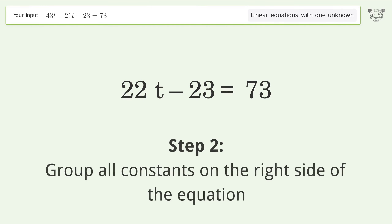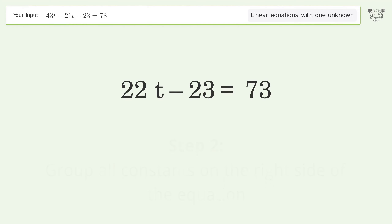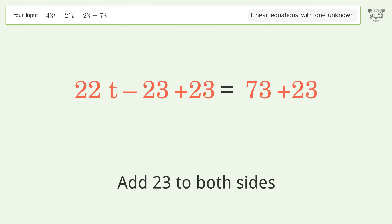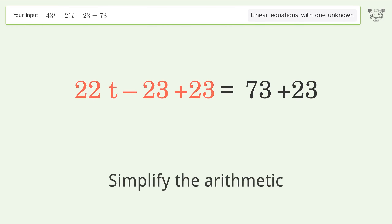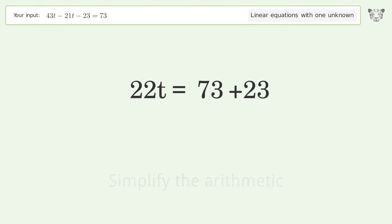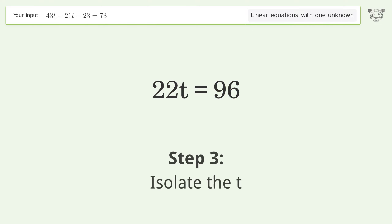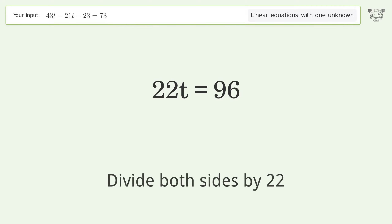Group all constants on the right side of the equation by adding 23 to both sides. Simplify the arithmetic. Then isolate t by dividing both sides by 22.